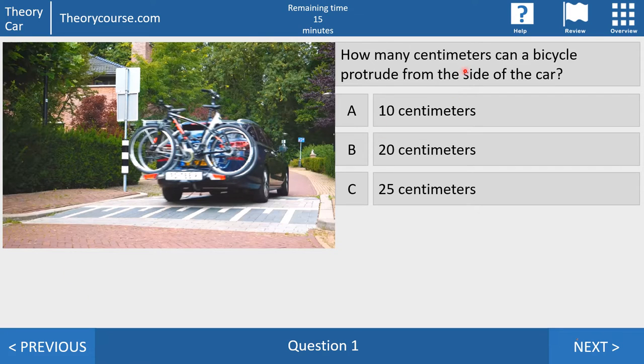How many centimeters can a bicycle protrude from the side of a car? Answer A, 10 centimeters. Answer B, 20 centimeters. Or answer C, 25 centimeters. Right answer, 20 centimeters. 20 centimeters on the right and also 20 on the left. So not 35 left and nothing on the right. No. Per side, 20 centimeters. No more.